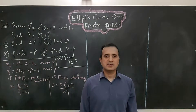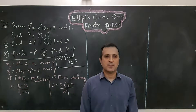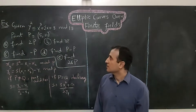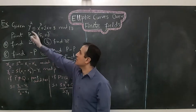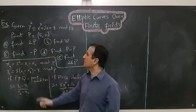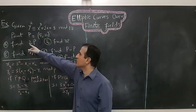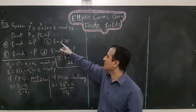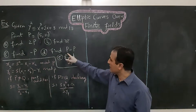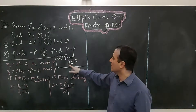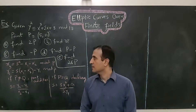Let's do an example. This example will help us understand these equations and also develop our intuition about elliptic curves. We are given an elliptic curve and a point P on that elliptic curve, and we have to solve five different parts: find 2P, find 3P, find minus P, calculate P minus P, and lastly calculate 26P.